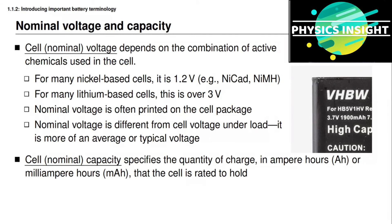Another important term is the capacity of the battery cell, sometimes called total capacity or total charge capacity. The capacity specifies the quantity of charge that the cell is rated to hold. The metric unit for charge is coulombs, but coulombs are awkward and very small units — even a small battery cell holds many thousands of coulombs. So instead, capacity is specified in ampere-hours or milliampere-hours, which is the same as amperes times seconds converted to amperes times hours.